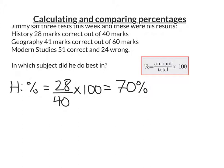So we got 70 percent for his History. For Geography, do exactly the same. He got 41 correct out of 60 and times that by 100 and he gets 68.3 percent.